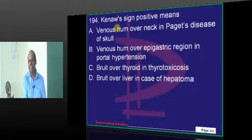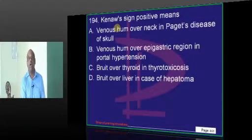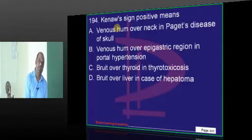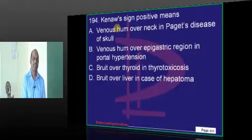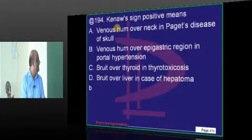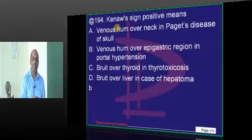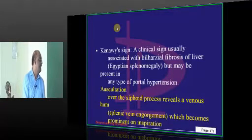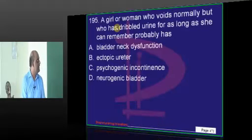Very good — this is a difficult question: Cruveilhier-Baumgarten sign. Venous hum in portal hypertension — venous hum on the epigastric area — is also typically seen in biliary fibrosis of the liver. On auscultation you will find it.